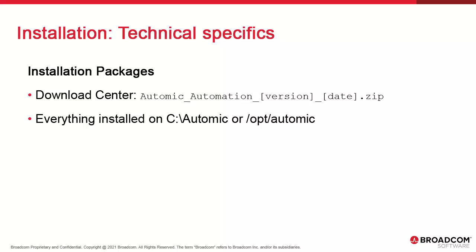To install Atomic Automation, you download the latest installation package from our download center. Our recommendation is to install everything in a dedicated file system on every host, say, /opt/atomic or C:\atomic. The installation package will be unzipped. As we deploy each component, they will be individually installed, and you will see directories created under the base instance directory.